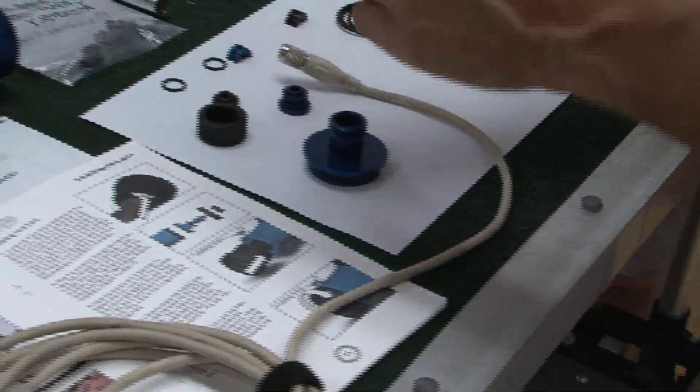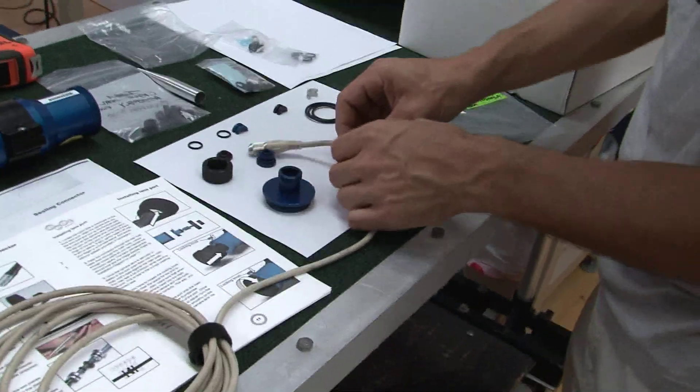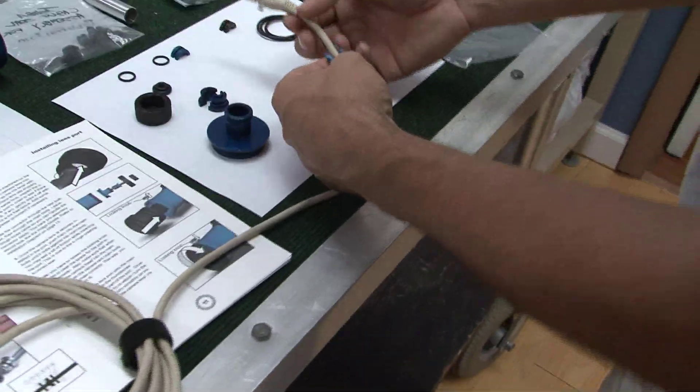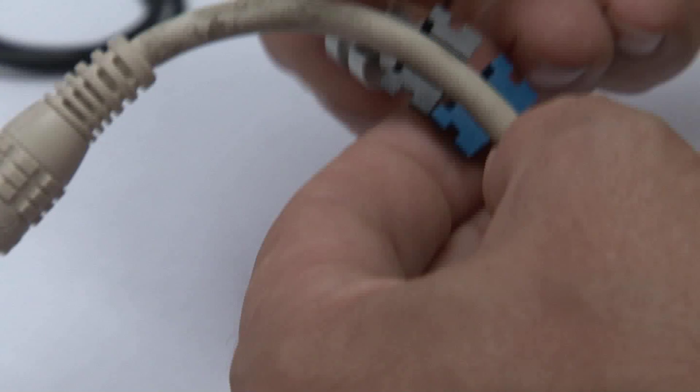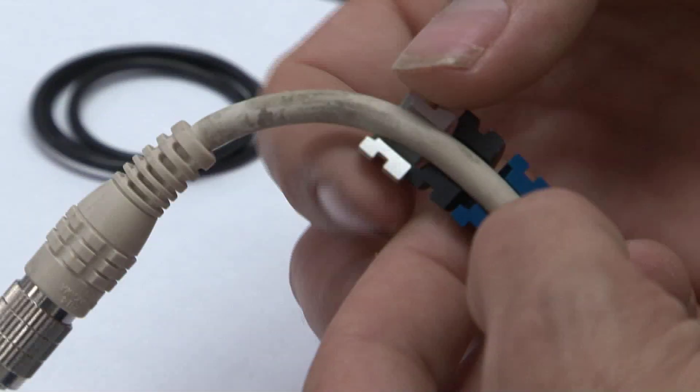Now, for the cables, there are the fittings that will fit around the cable. We have a blue, we have a black, and we have a silver. Each one of them is a different size. You'll notice that the blue fits the best onto the cable. So, we'll be using the blue.